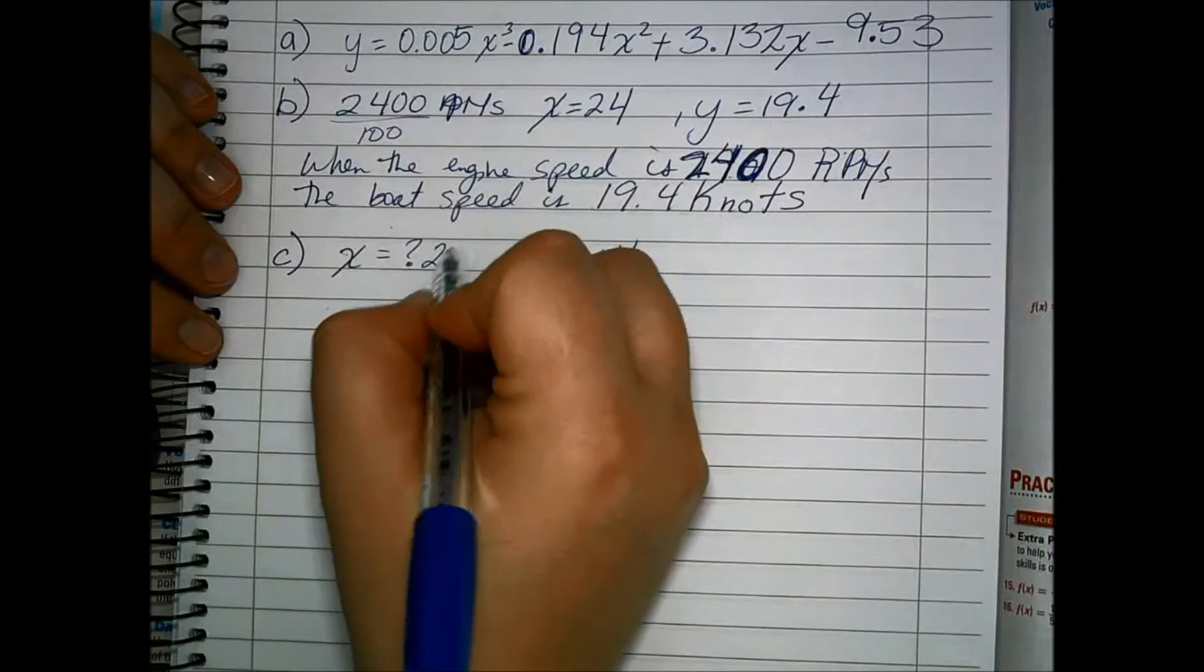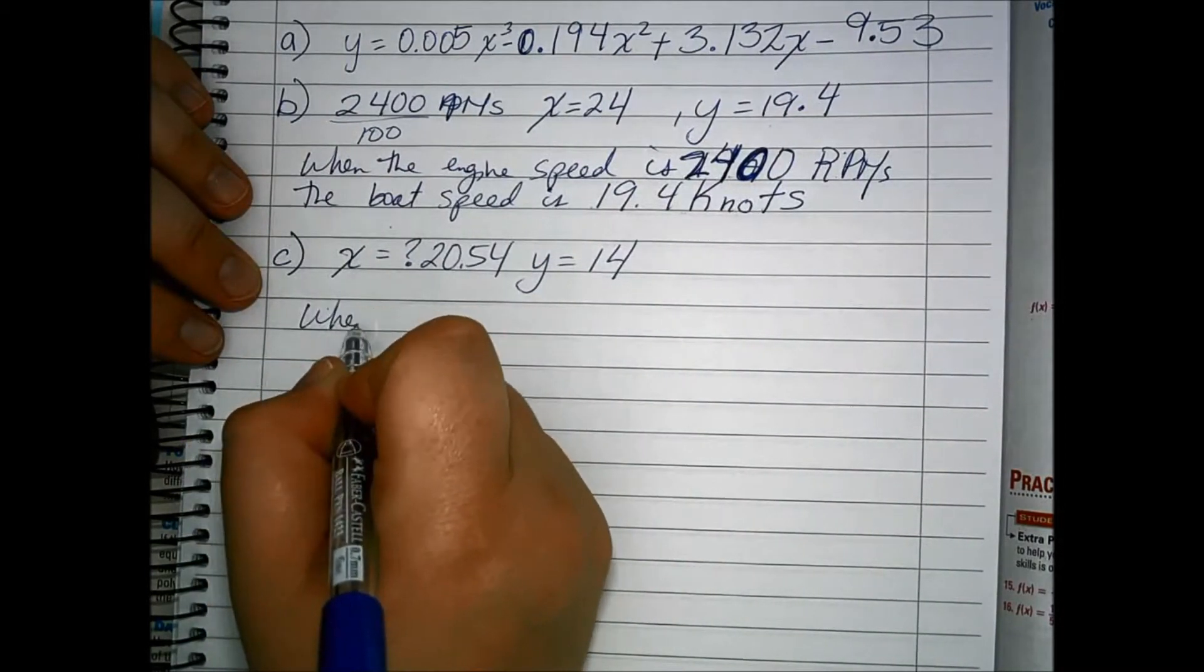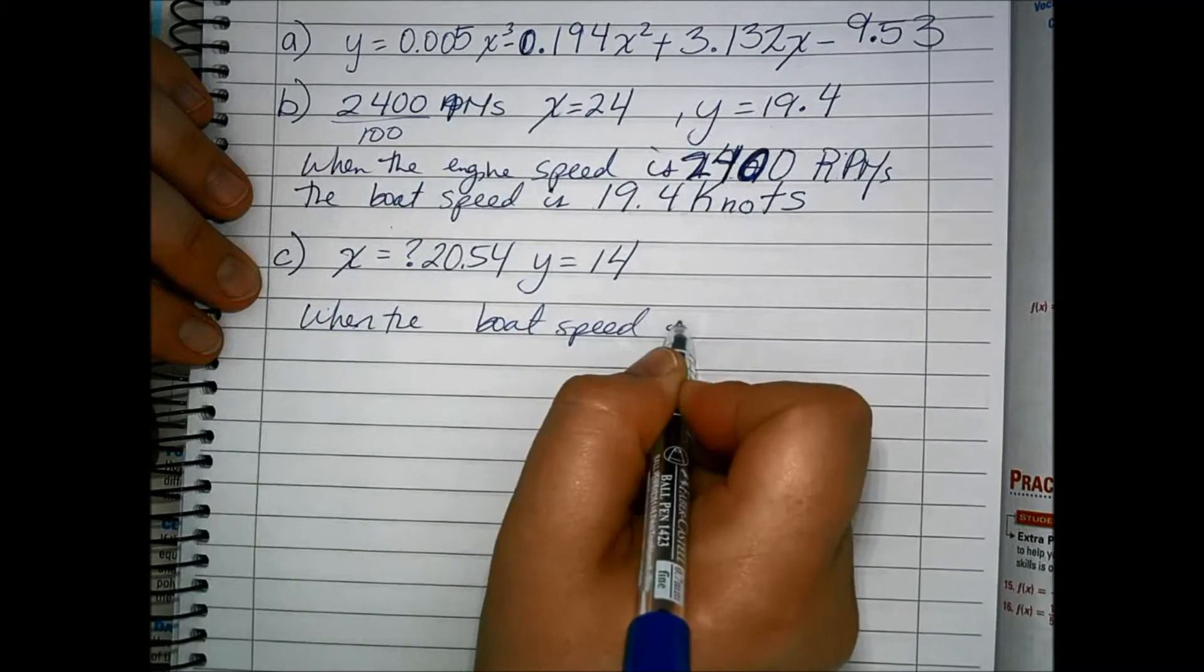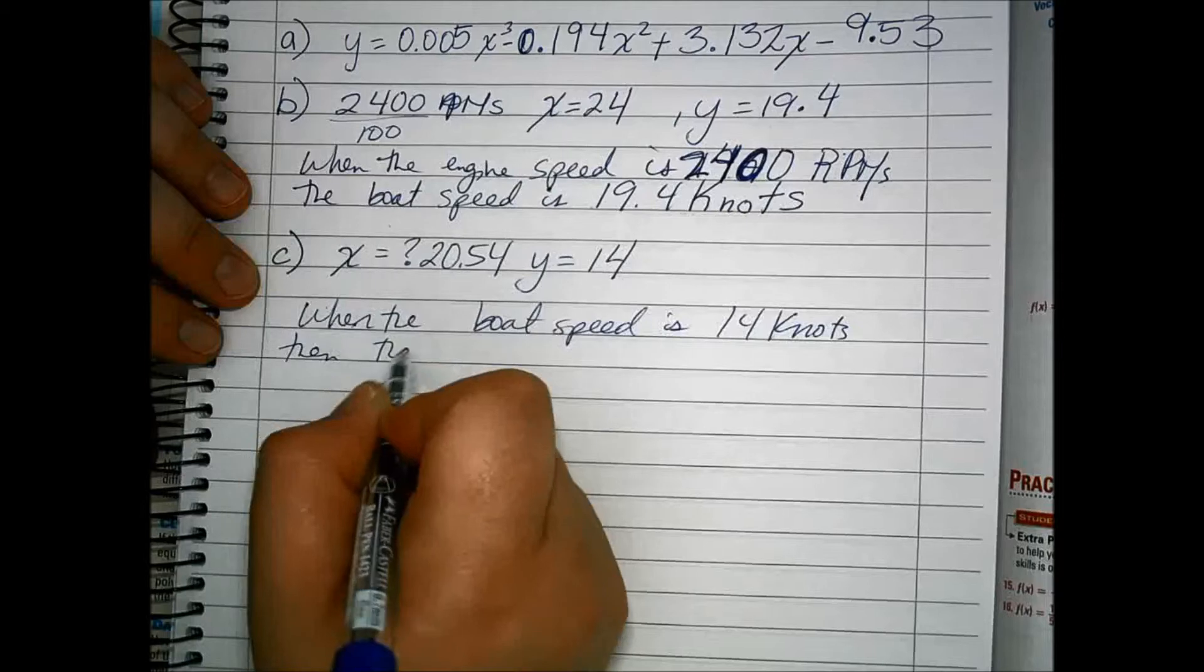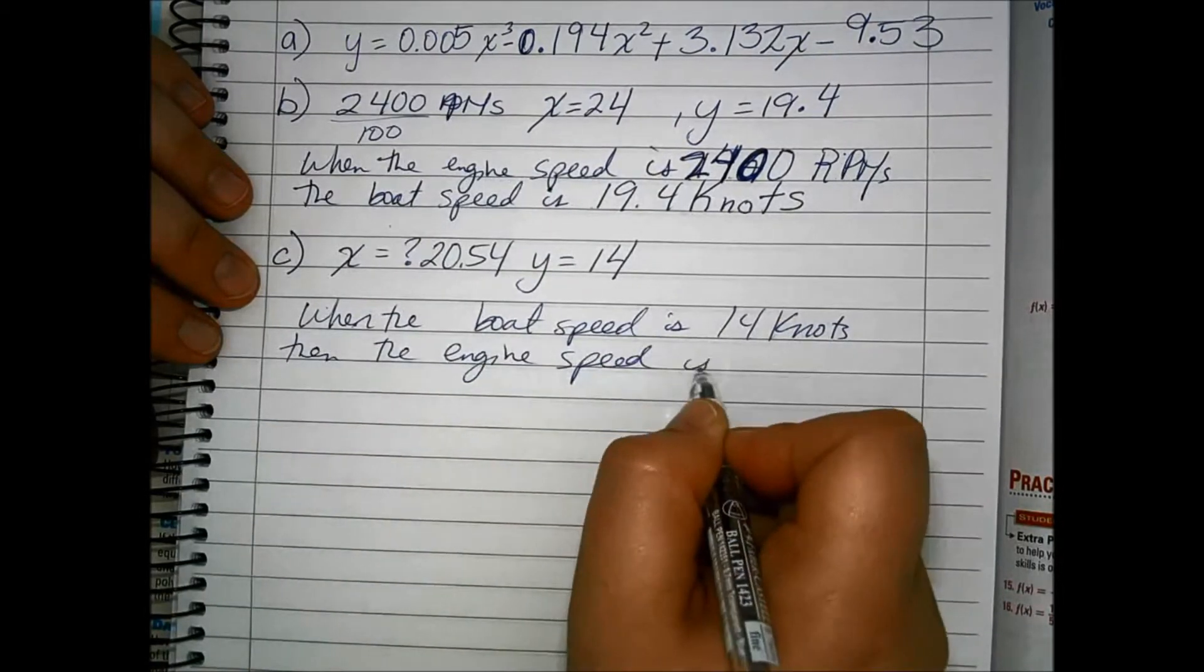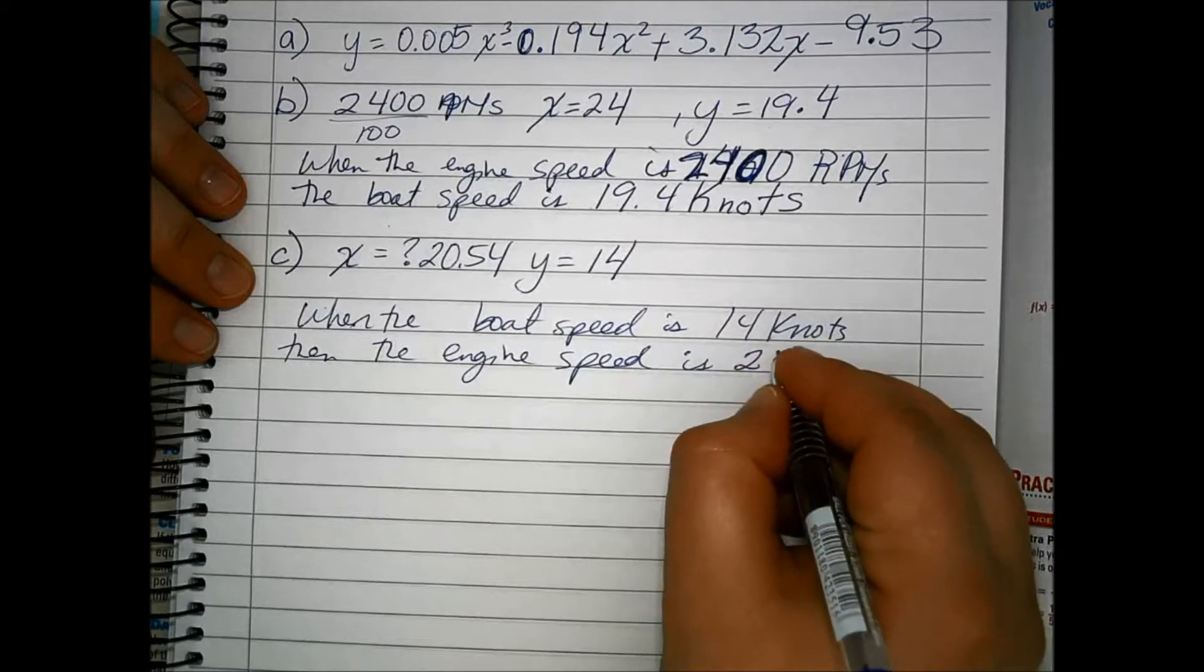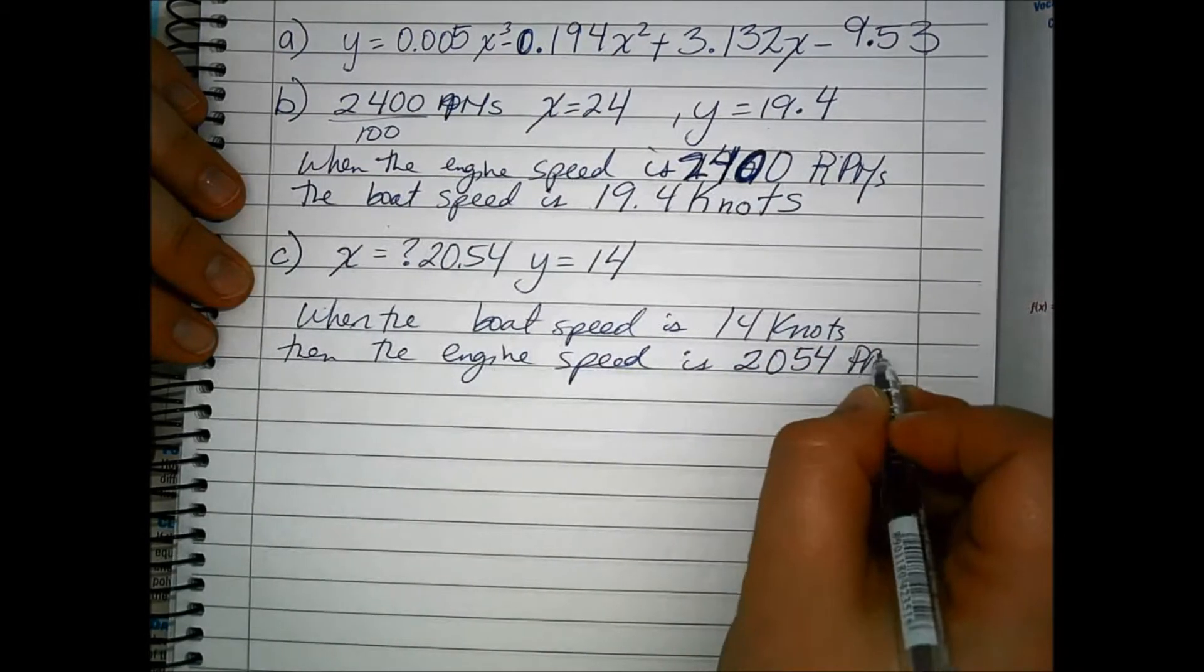So x equals 20.54. That means that when the boat speed is 14 knots, then the engine speed is, now I'm going to multiply the value by 100, 2054 RPMs.